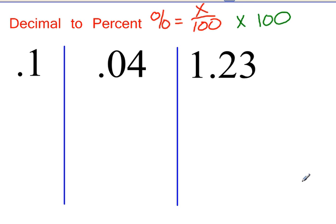So 1 tenth would move the decimal one places, two places. But I need to fill in this placeholder. So now the decimal will be right here. So this would be 10 percent.